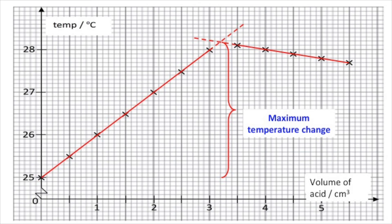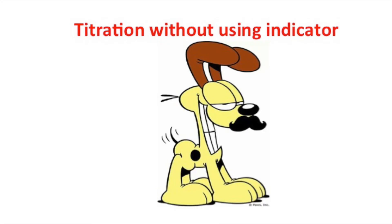And the acid is 3.2 something cm³. And this is the equivalent point because this is the highest temperature change. So we can conclude that the acid and base are all neutralized together at this point. This is called equivalent point.